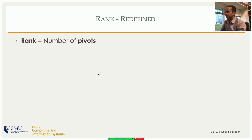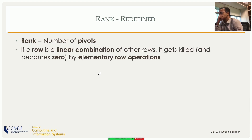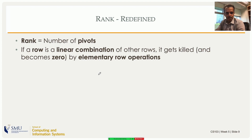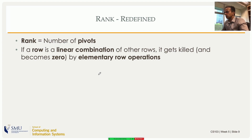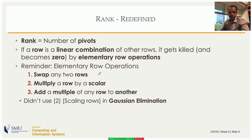We originally defined the rank as the number of pivots in the REF. If a row is a linear combination of other rows, that means an equation can be obtained by algebraic manipulations of other equations — by doing row operations. That row will get killed, becoming a zero row, pushed to the bottom of the REF of the augmented matrix. Every non-zero row will have a pivot, so the number of pivots equals the number of rows that cannot be killed — the number of linearly independent rows.